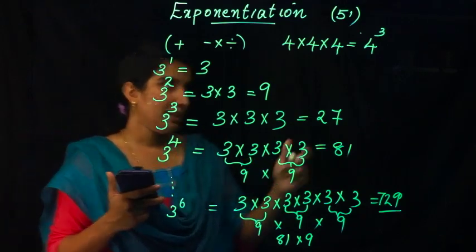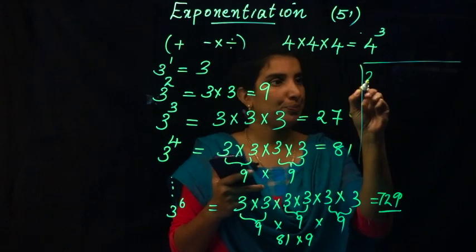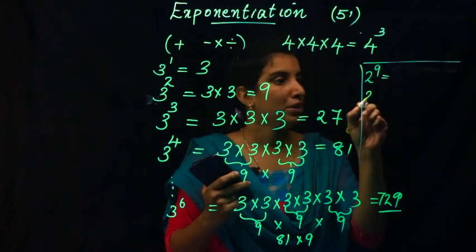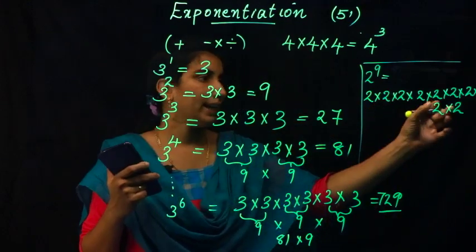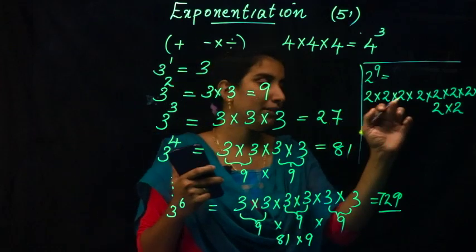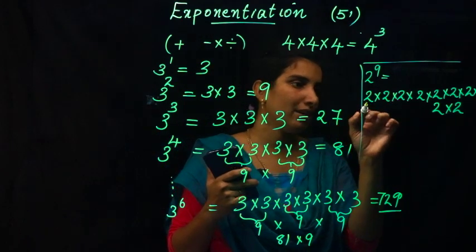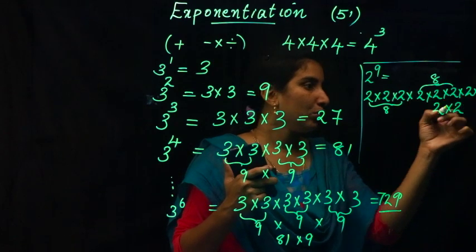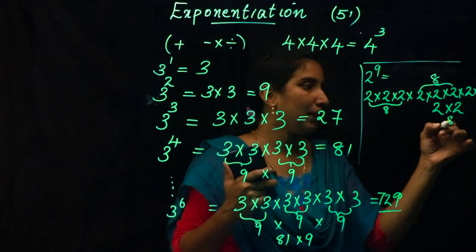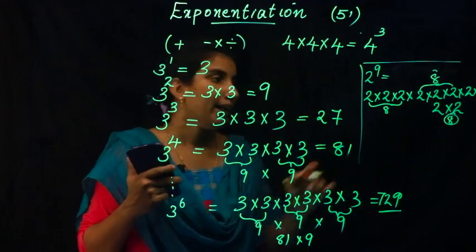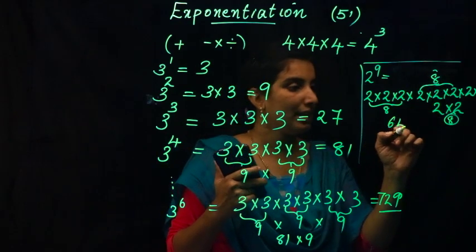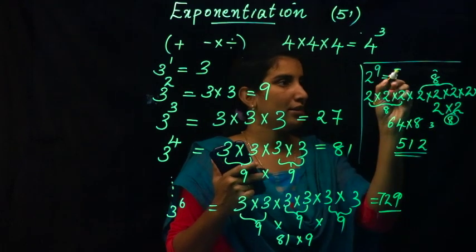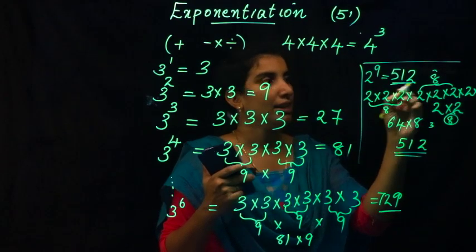Now we have another example from the textbook: 2 raised to 9. We use 2 nine times and multiply. 2 × 2 = 4, 4 × 2 = 8, then continuing to multiply by 2. 8 × 8 = 64, 64 × 8 = 512. So 2 raised to 9 equals 512.